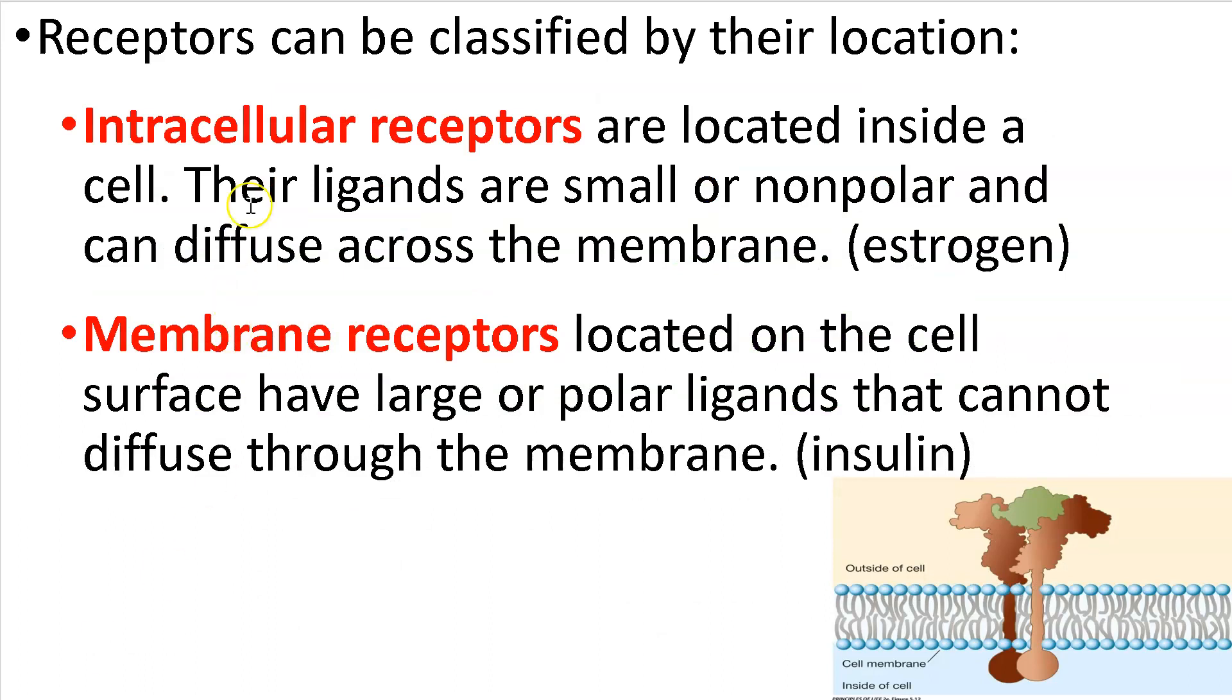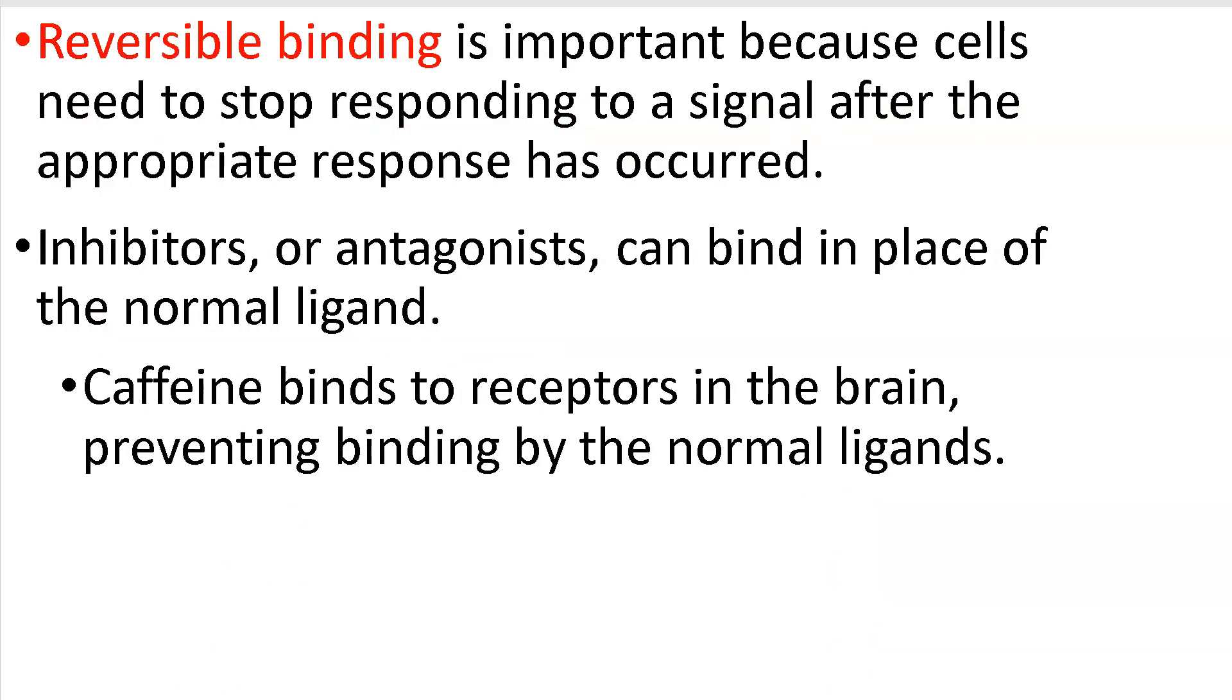So receptors can be classified by their location. You can have intracellular receptors located inside of a cell and then membrane receptors located on the surface. They have large or polar ligands that cannot diffuse across the membrane. This is an example that would be insulin. An example of an intracellular one would be like steroids, like testosterone or estrogen. Those diffuse, those need to be able to go inside the cell because that's where their receptors are. Reversible binding is important because cells need to stop responding, again maintaining homeostasis, to a signal after the appropriate response has occurred. So inhibitors or antagonists, this is where our caffeine molecule comes into play, it's an antagonist of adenosine, can bind in place of the normal ligand. So there's good old caffeine, preventing binding of the normal ligands, therefore you stay awake.